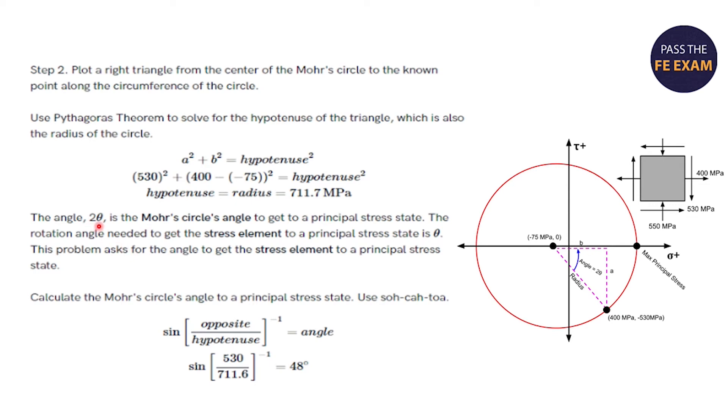The angle 2θ is the Mohr's circle's angle to get a principal stress state. The rotation angle needed to get the stress element to a principal stress state is θ. This problem asks for the angle to get the stress element to a principal stress state. You got to be careful there. You got to understand the difference between the two. So you can calculate the Mohr's circle's angle to a principal stress state using SOHCAHTOA. We finally used SOHCAHTOA. We learned it in school, we didn't know if it was going to come in handy ever in our lives, but it comes in handy here. And using it, you can determine that the angle shown here, which is 2θ, is 48 degrees.